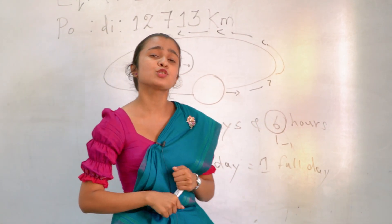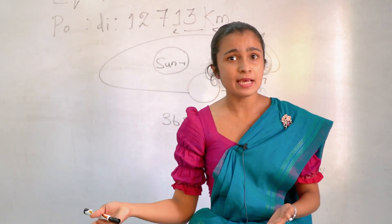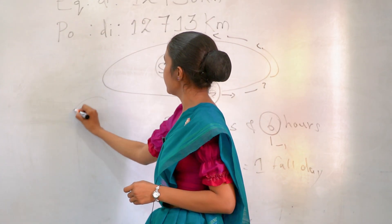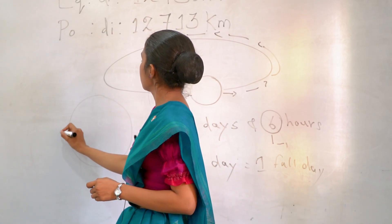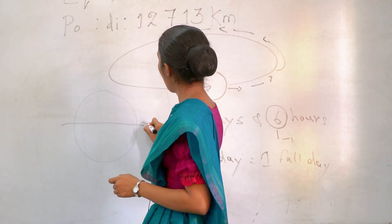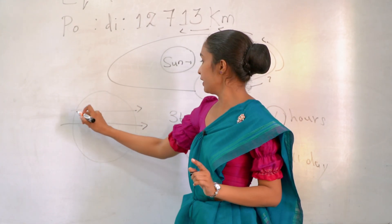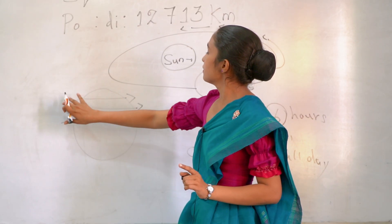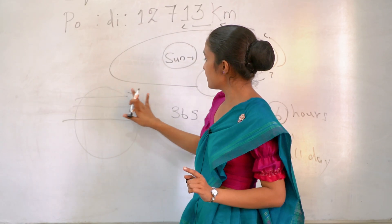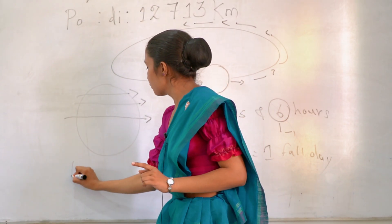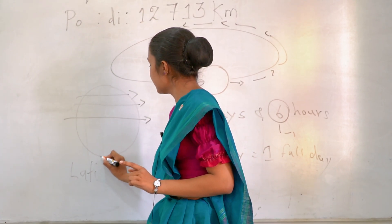So now we are going to talk about latitudes and longitudes. Latitudes means the lines drawn horizontally. Those are imaginary lines. So these lines drawn horizontally from west to east. Now we are going to call it as latitudes.